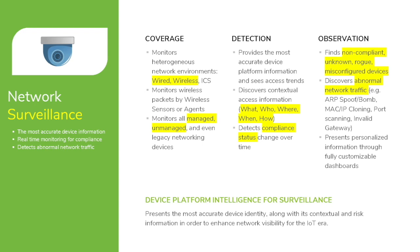During the detection phase, you want to be able to know who, what, where, when, and how relative to connectivity, and of course record compliance status with any configured security policies. You want to be able to easily identify and observe non-compliant, unknown, rogue devices, or any misconfigured devices that may be sending abnormal traffic or causing network issues. Device platform intelligence by Genians provides low-level detailed information to address these core components of good network surveillance.